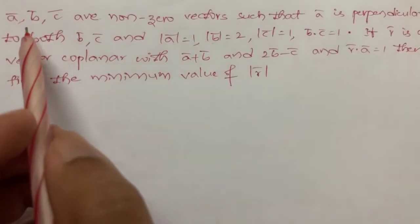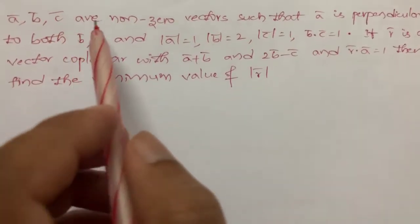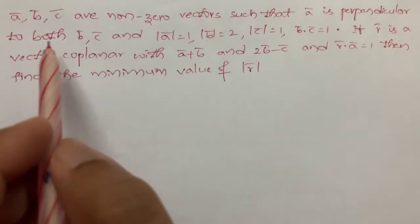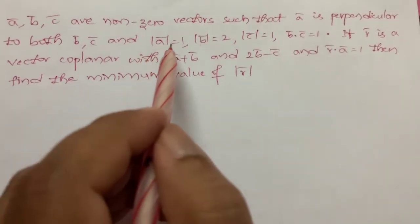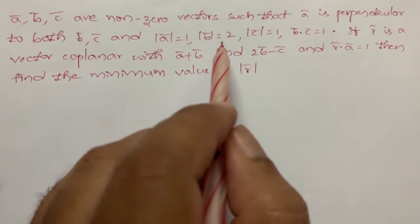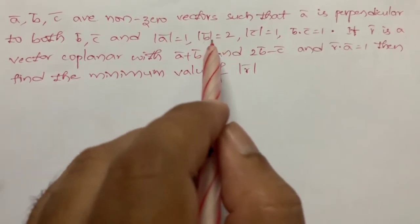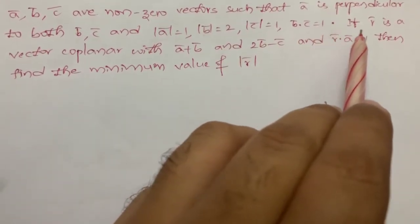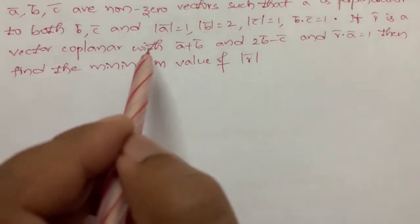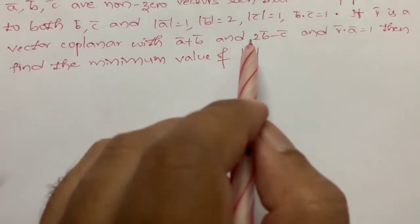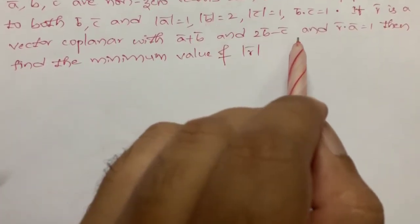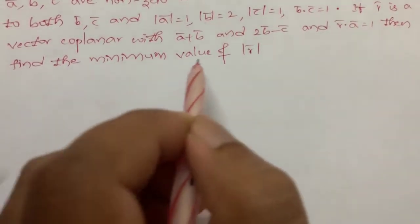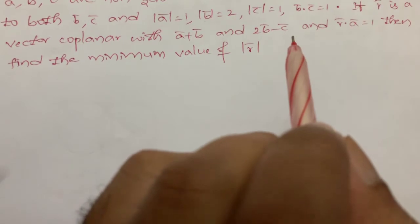Let us look at this problem. a bar, b bar, c bar are nonzero vectors such that a bar is perpendicular to b bar and c bar, and the magnitude of a bar is equal to 1, magnitude of b bar equal to 2, magnitude of c bar equal to 1, and b dot c equal to 1. If r bar is a vector coplanar with a bar plus b bar and 2b bar minus c bar, and r bar dot a bar equal to 1, then find the minimum value of magnitude of r bar.